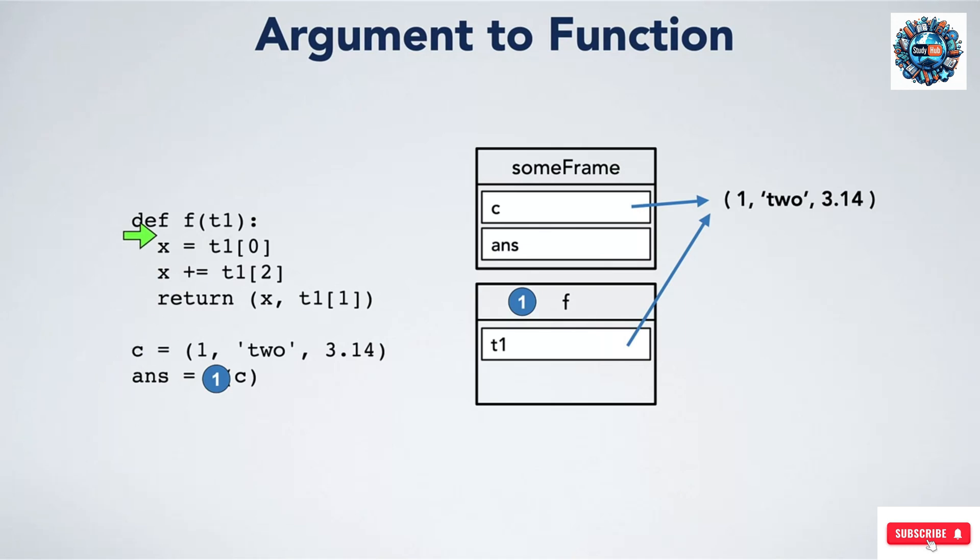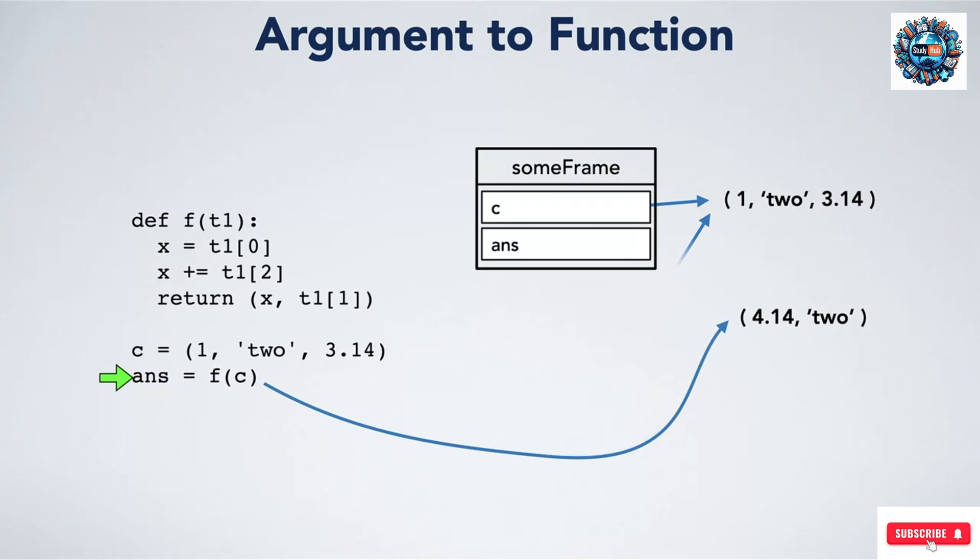We would then move our execution arrow into F and execute the statements there. In this example, we are going to index T1 at 0, which will be 1, and assign it to x. Then we will index T1 at 2, which will be 3.14, which we will add to x. This last line is a return statement. Can you tell what kind of value it is returning? That's right, this function is going to return a tuple. So we create that value in the heap. The return value will be an arrow pointing at that tuple. So when we return, the function call will evaluate to an arrow pointing at this tuple, which then gets assigned to ans.